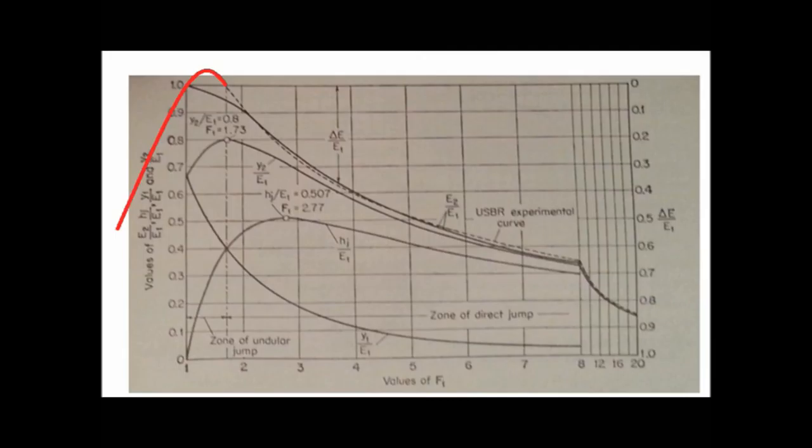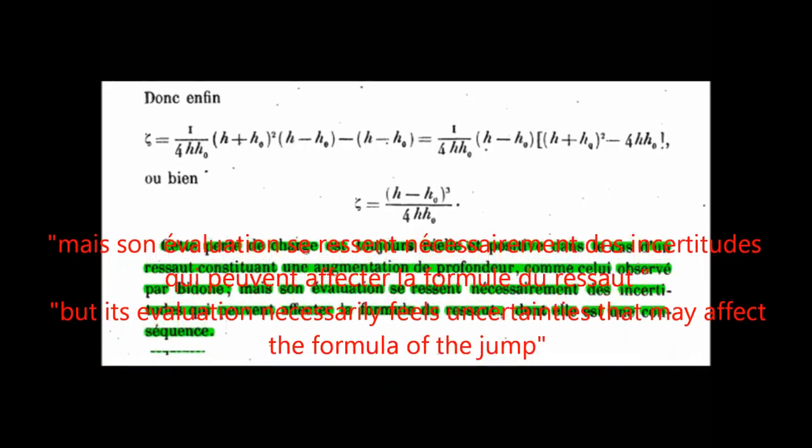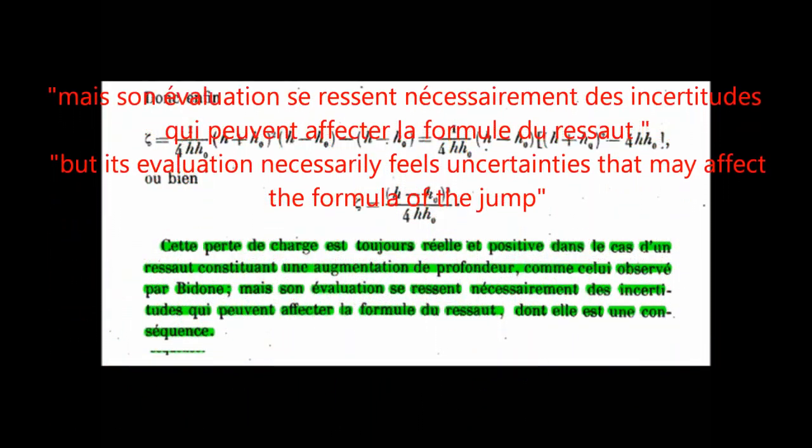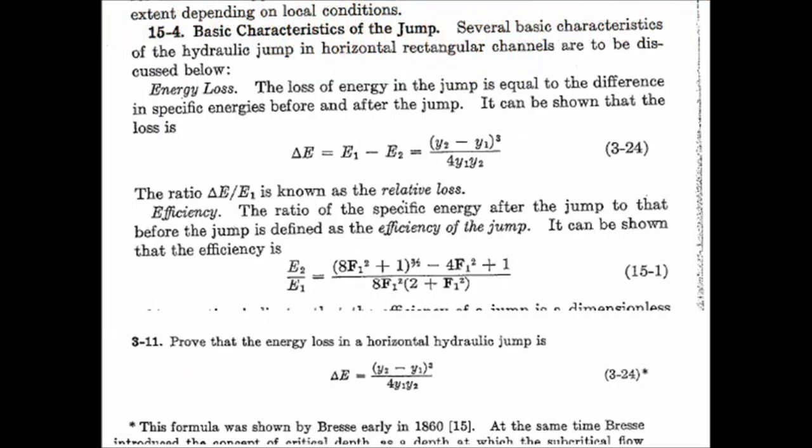The missing part of the curve is drawn in this picture with the red line. The theoretical energy losses were calculated by the equation from Bresse from year 1860.